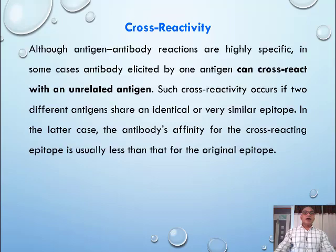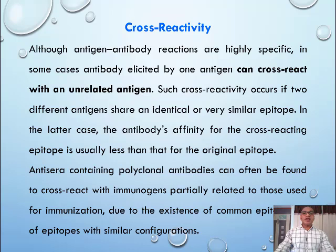Cross-reactivity: although antigen-antibody reactions are highly specific, in some cases an antibody elicited by one antigen can cross-react with an unrelated antigen. Such cross-reactivity occurs if two different antigens share an identical or very similar epitope. In the latter case, the antibody's affinity for the cross-reacting epitope is usually less than that for the original epitope. Antisera containing polyclonal antibodies can often be found to react with immunogens partially related to those used for immunization, due to the existence of common epitopes or epitopes with similar configurations.